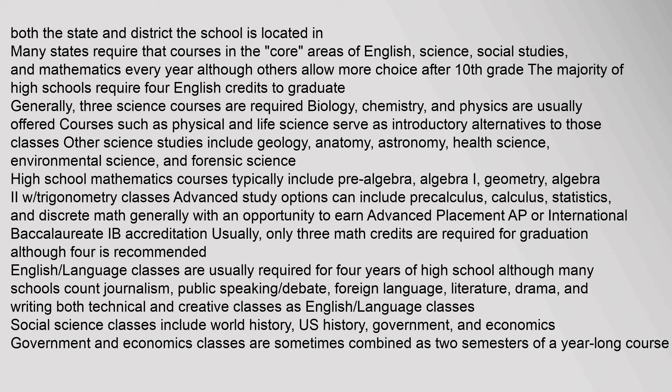Other science studies include Geology, Anatomy, Astronomy, Health Science, Environmental Science, and Forensic Science. High school mathematics courses typically include Pre-Algebra, Algebra I, Geometry, and Algebra II with Trigonometry. Advanced study options can include Pre-Calculus, Calculus, Statistics, and Discrete Math, generally with an opportunity to earn Advanced Placement (AP) or International Baccalaureate (IB) accreditation. Usually only three math credits are required for graduation, although four is recommended.